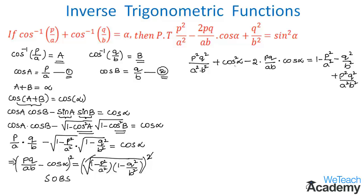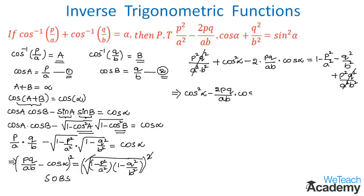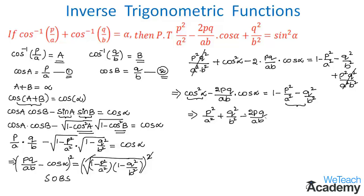There are similar terms on both sides — P²Q²/A²B² appears on both — so they cancel. We are left with: cos²α − 2PQ/AB · cos α = 1 − P²/A² − Q²/B². Transferring P²/A² and Q²/B² to the left and cos²α to the right gives: P²/A² + Q²/B² − 2PQ/AB · cos α = 1 − cos²α.